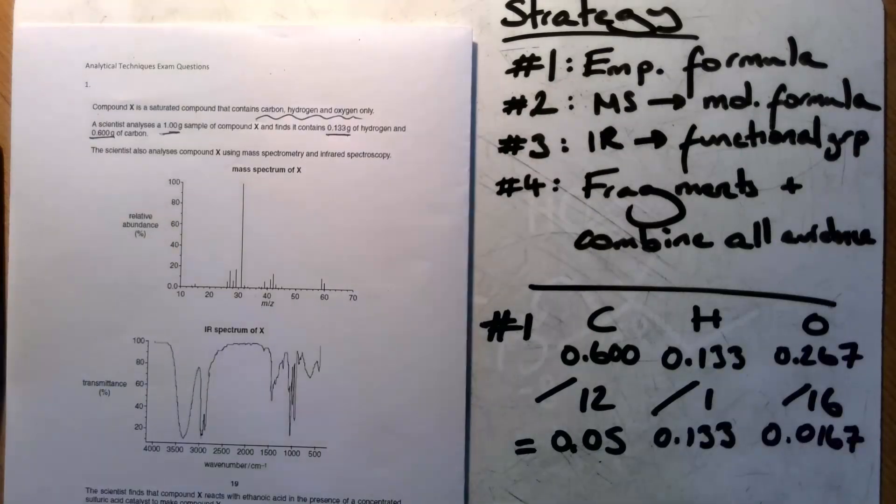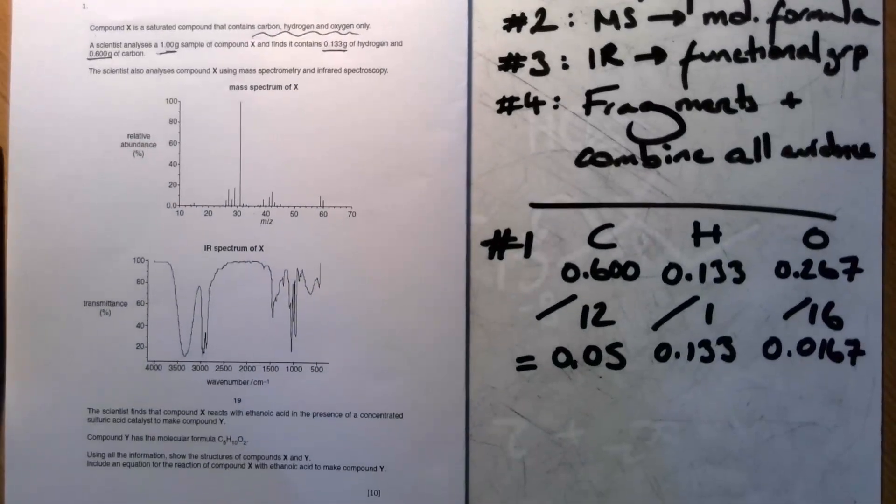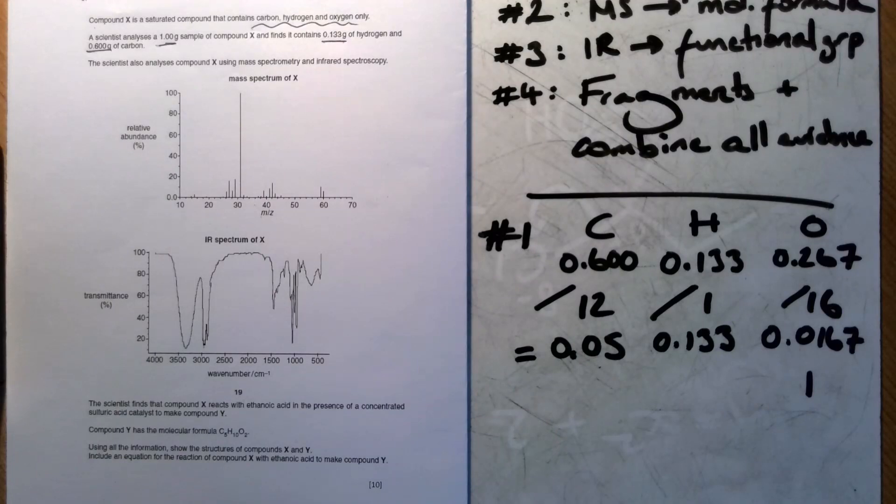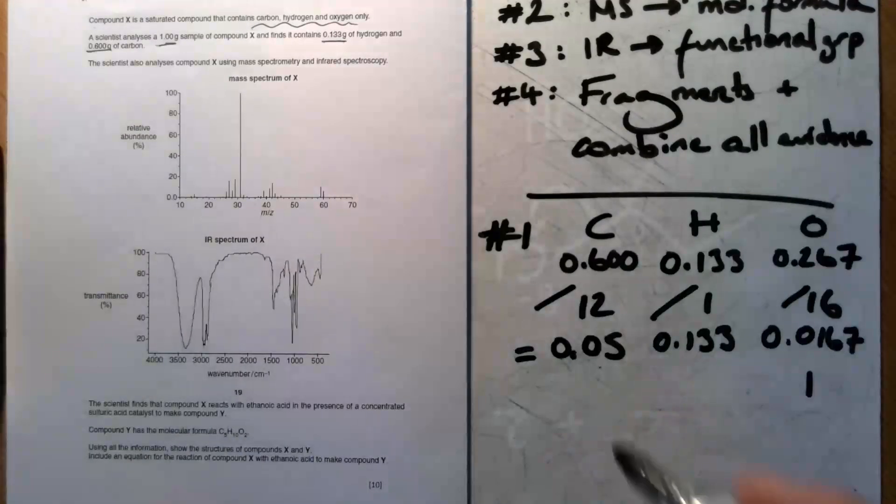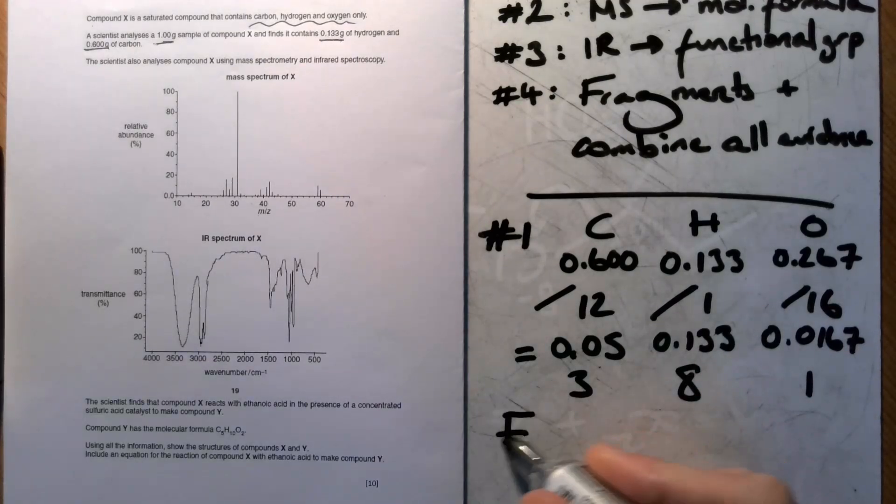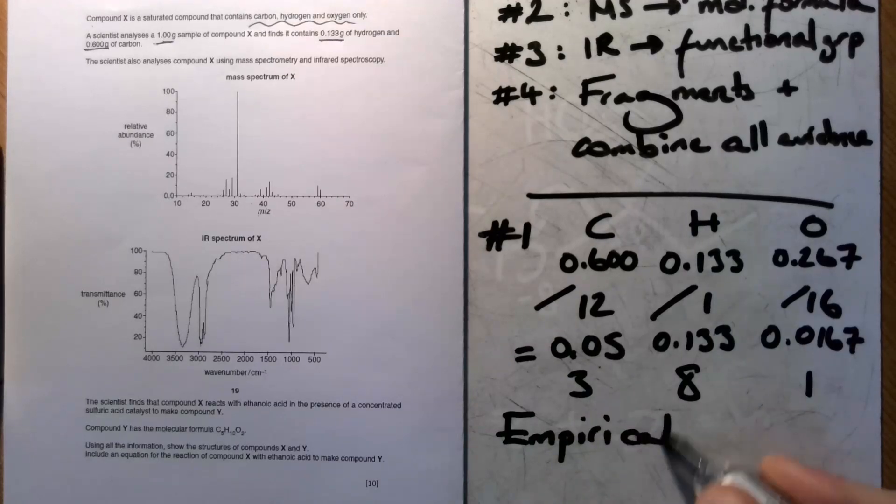From that point we know we've got to divide by the smallest one. So the smallest one here is 0.0167, so that's going to be 1. 0.05 divided by 0.0167 is 3-ish, and 0.133 divided by 0.0167 is 8-ish. So that means our empirical formula is C3H8O.